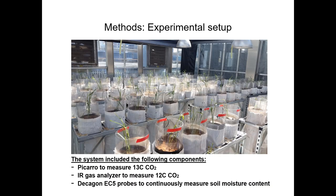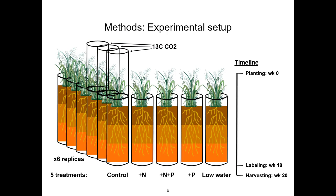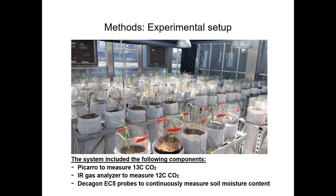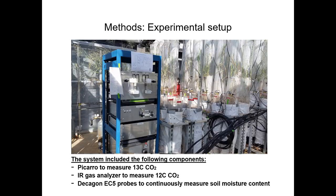This is the timeline of the experiment. After 18 weeks, we started ¹³C CO₂ labeling, and two weeks afterward, at week 20, we destructively harvested all the mesocosms. Here are pictures of how the greenhouse experiment looked — you can see the different mesocosms with the switchgrass inside. We used a Picarro instrument to measure ¹³C CO₂ and an infrared gas analyzer for ¹²C CO₂, and Decagon EC5 probes to continuously measure soil water content in the control and low-watering treatments.